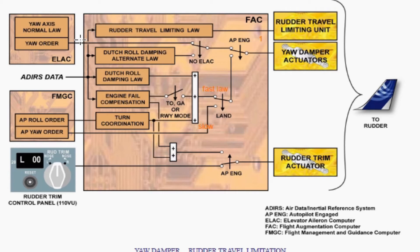Using the air data inertial reference system via the Flight Augmentation Computer — this is the short description when we have the auto-pilot engaged and disengaged. When the auto-pilot is engaged, the same yaw damper order functions are controlled by the Flight Augmentation Computer, except in land mode. In land mode, it is controlled by the Flight Management and Guidance Computer.